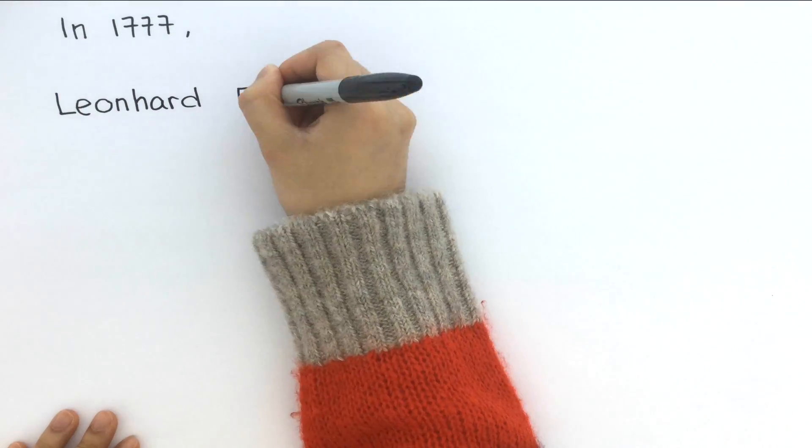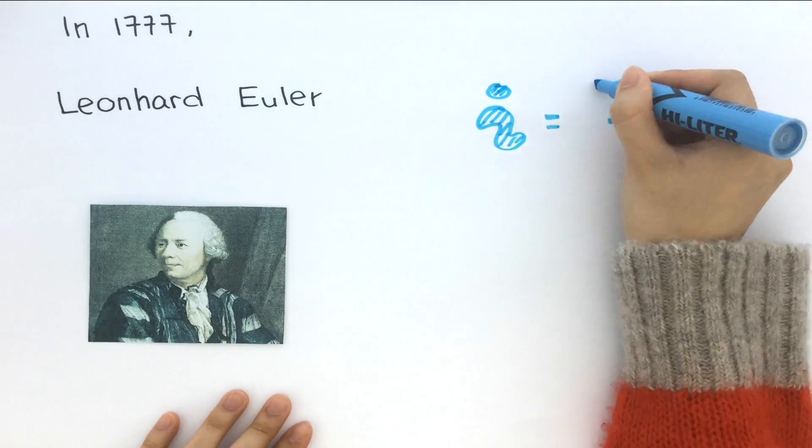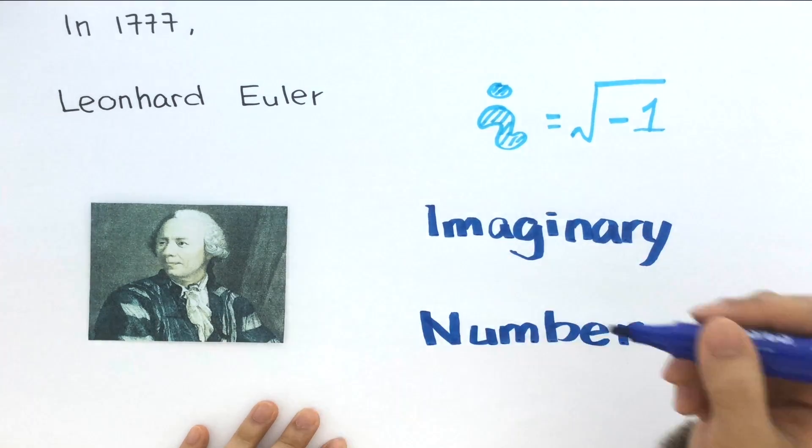Then, in 1777, Leonhard Euler assigned the symbol i to stand for square root of negative 1. He called this the imaginary number.